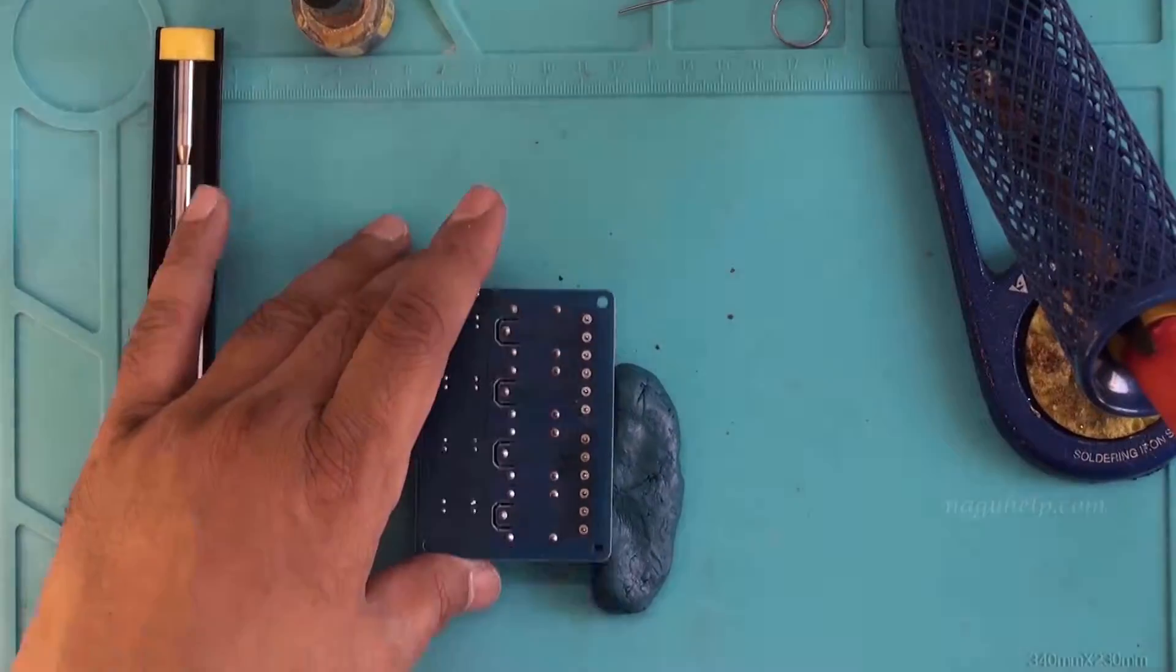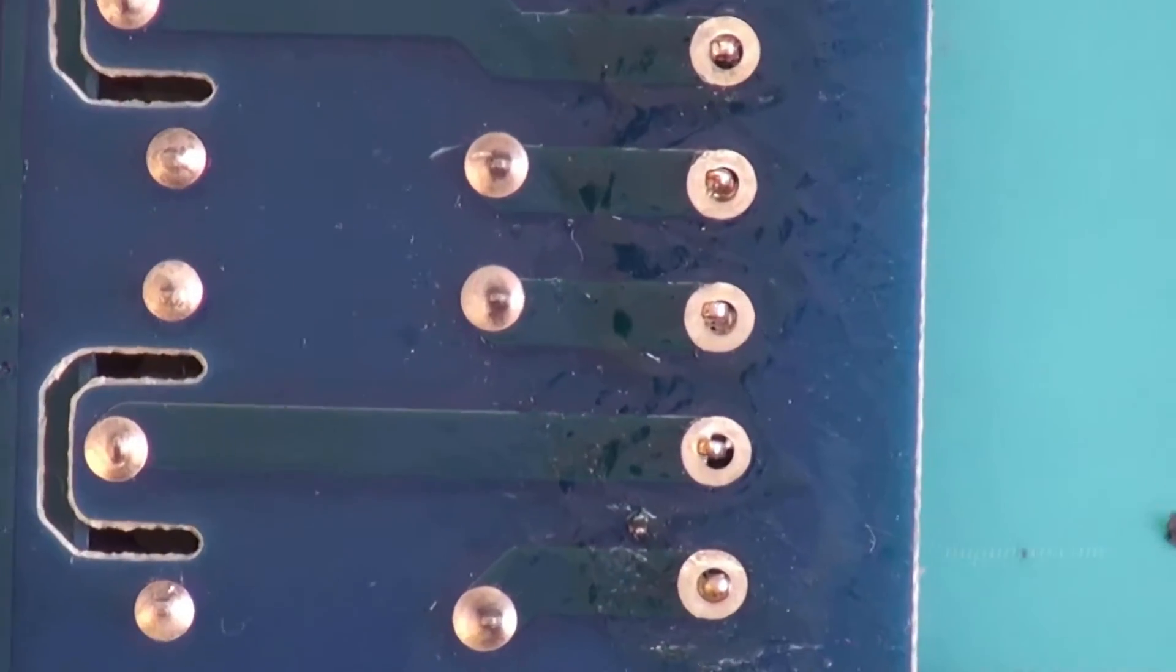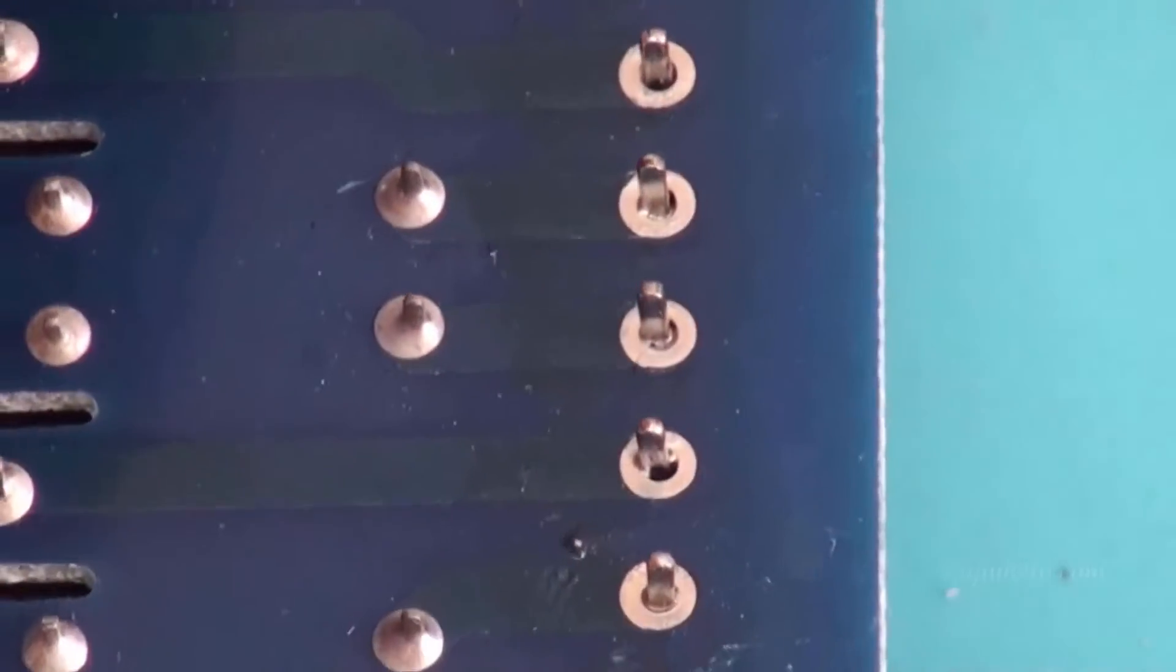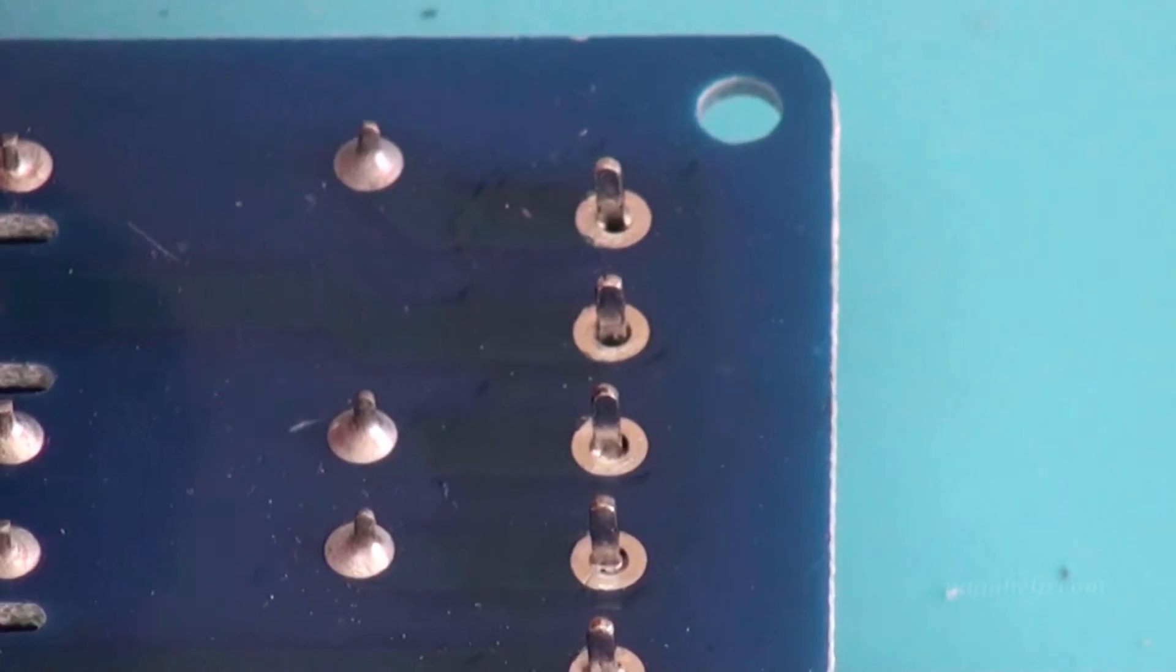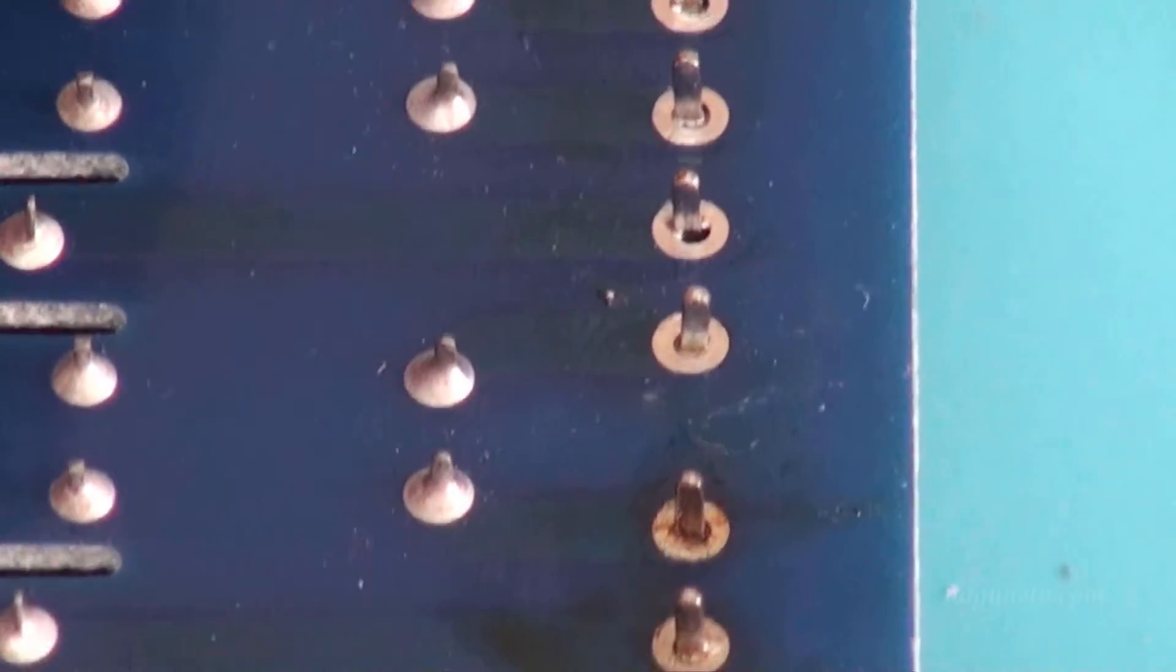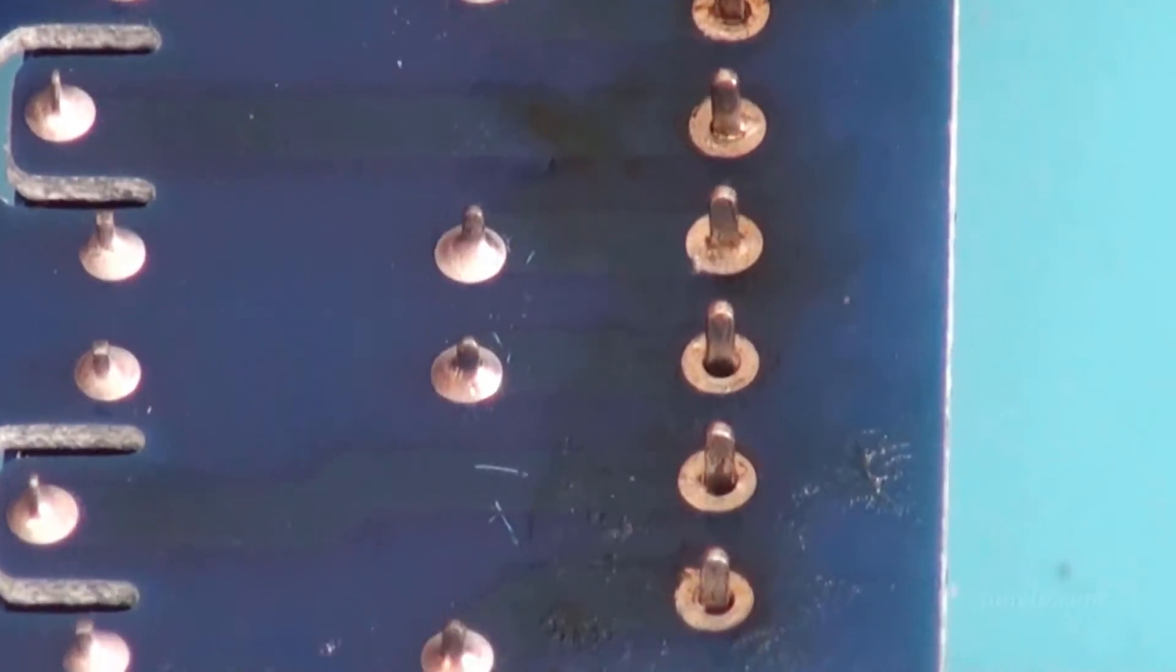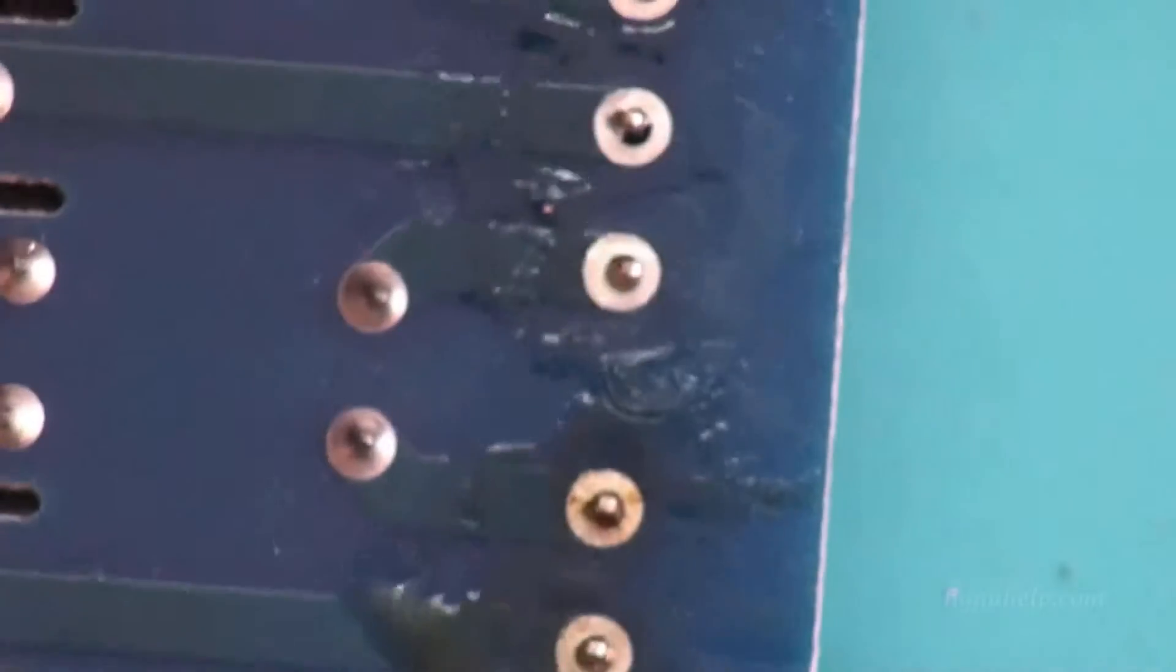Now de-soldering is over and let's have a closer view of de-soldered pins. We can see that solder is completely removed. These de-soldering bits are very useful and makes de-soldering process easy and fast.